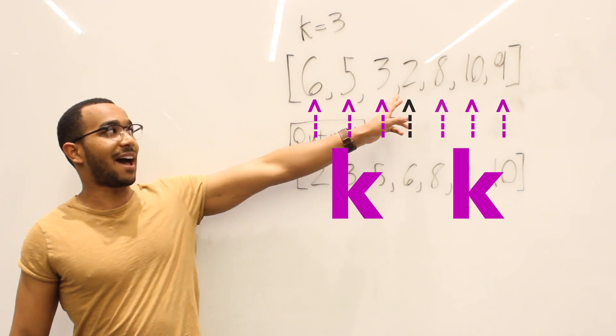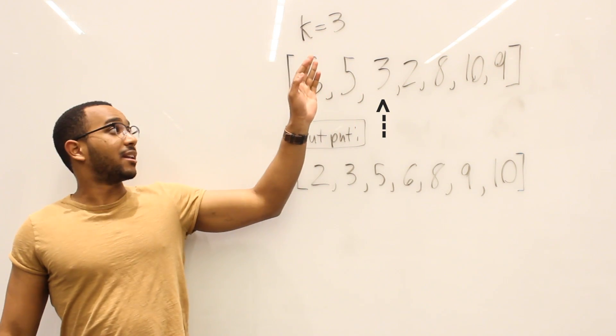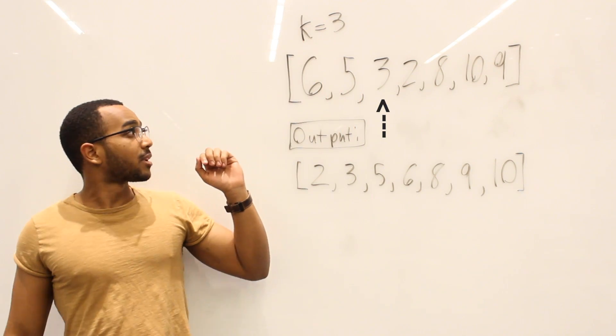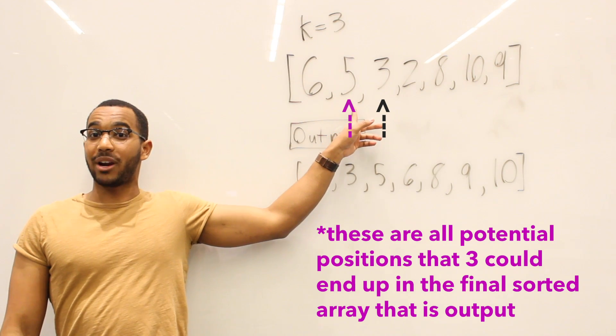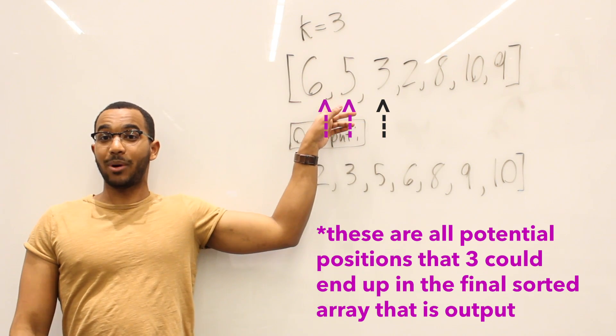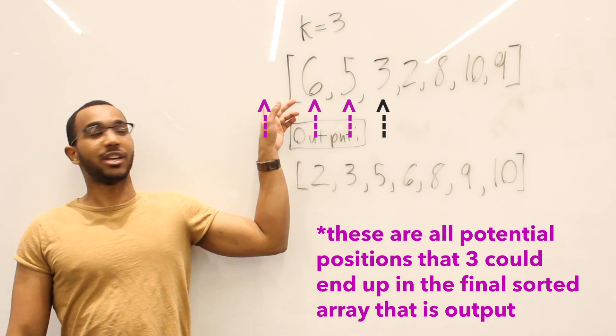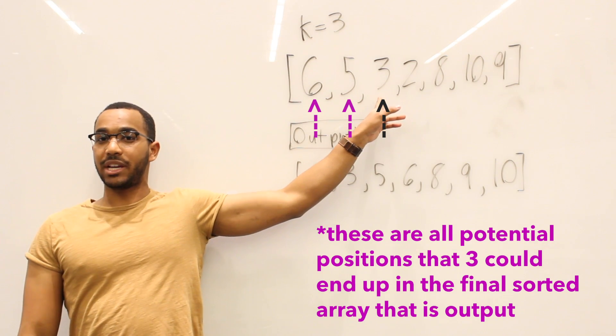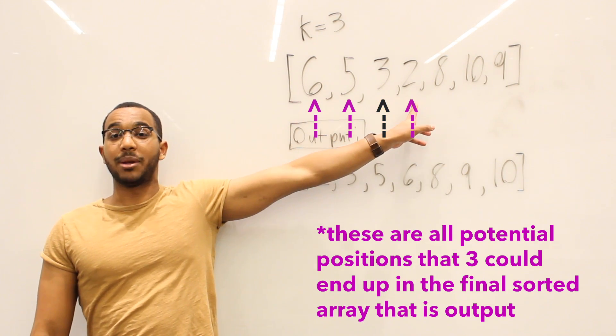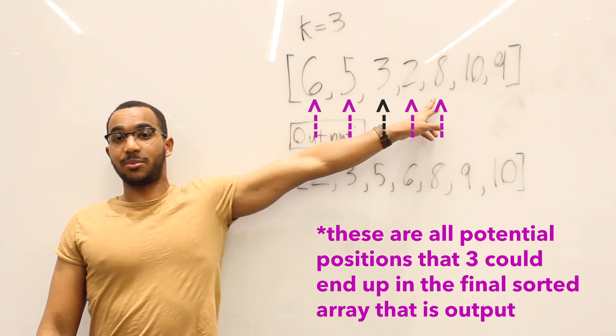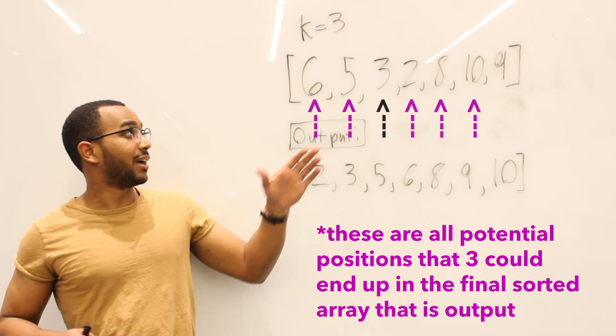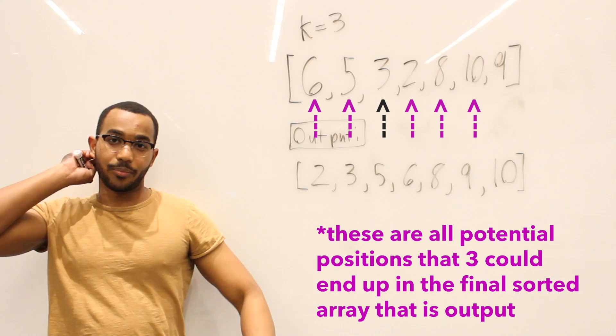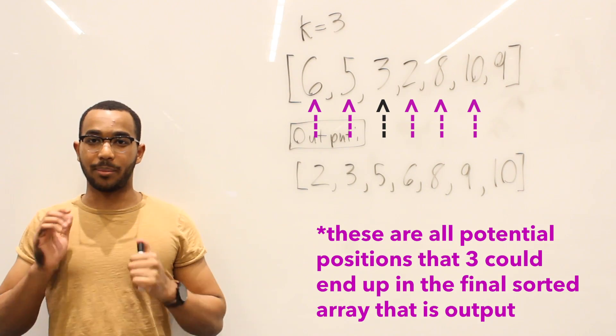So for example, if I have the three here and K is three, that means three could be here, one behind where it presently sits, two behind where it presently sits, and it can't be over here. Come back to the three. It can be one element past itself, two elements past itself at the eight, and then three elements past itself at the 10. So that's basically what this problem means.